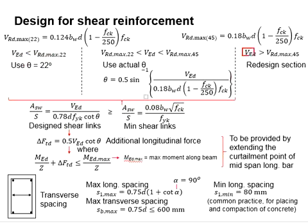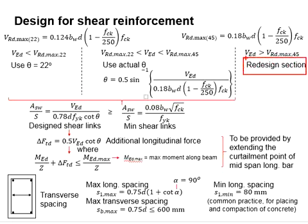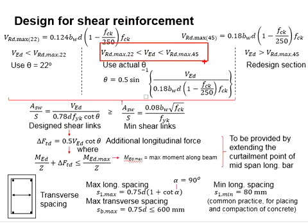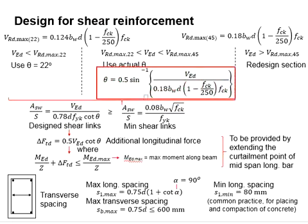When your shear load is more than the resistance of the member with a 45-degree shear angle, you will have to redesign the section — specifically, increase the size of the member. When the shear resistance at 22 degrees is greater than the shear load while the shear resistance at 45 degrees is less than the shear load, the shear angle will be somewhere between 22 and 45 degrees, and you need to determine the exact angle using the relevant equation.